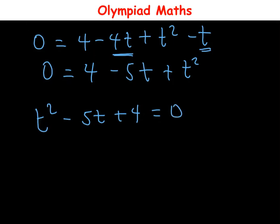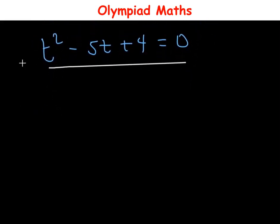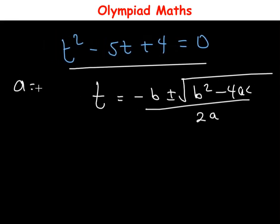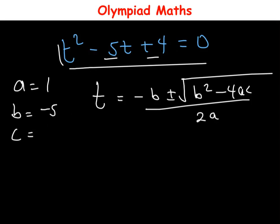What we have is a quadratic equation. To solve for t we are going to use the quadratic formula: t = [−b ± √(b² − 4ac)] / 2a. In this case the value of a is the coefficient of t², which is 1; b is the coefficient of t, which is −5; and c is the constant, which is 4.